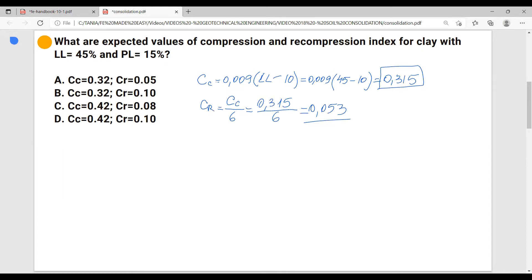Okay, so it seems like it's A, right? 0.32 and 0.05. And I have another problem.